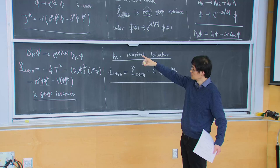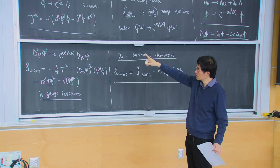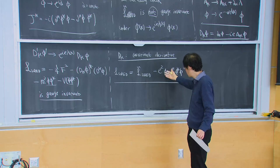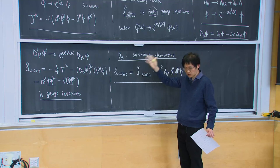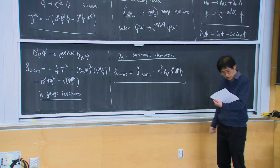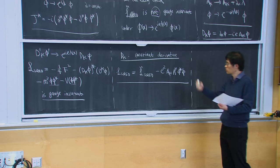Let me just make a comment: in this story, the global charge from the global U(1) current now becomes the electric charge coupled to the electromagnetic field — same as in the fermion case. Now let's draw the Feynman rules from the QED Lagrangian.